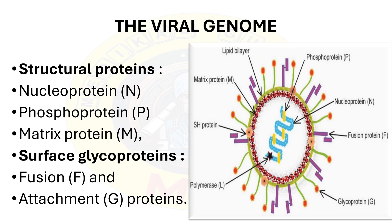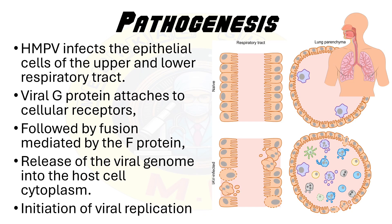The viral genome encodes structural proteins such as nucleoprotein, phosphoprotein, and matrix protein, as well as surface glycoproteins including the fusion and attachment proteins. These glycoproteins are pivotal in viral entry and cell attachment, facilitating the fusion of the viral envelope with the host cell membrane.